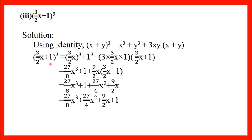So: x³ becomes (3/2 x)³, y³ becomes 1³ = 1. Then 3xy becomes 3 × (3/2 x) × 1. Simplify: (3/2)³ = 27/8, so the first term is 27/8 x³. Next: 3 × (3/2 x) × 1 = 9/2 x. Multiplying through the bracket (3/2 x + 1): (9/2 x) × (3/2 x) = 27/4 x², and (9/2 x) × 1 = 9/2 x. Now arrange: 27/8 x³ + 27/4 x² + 9/2 x + 1. This is the expanded form.